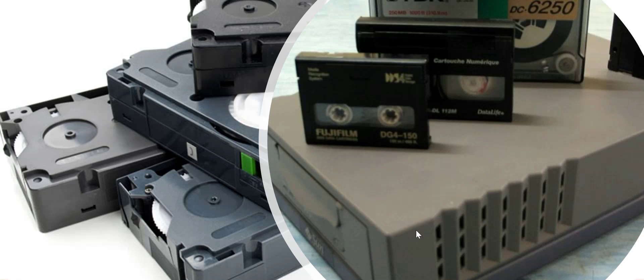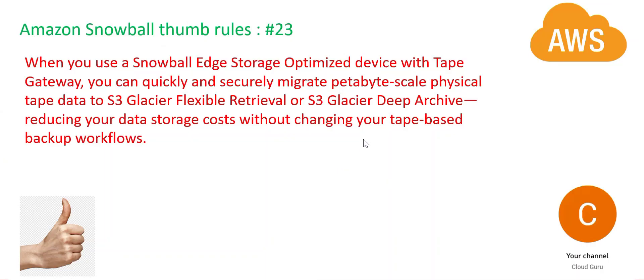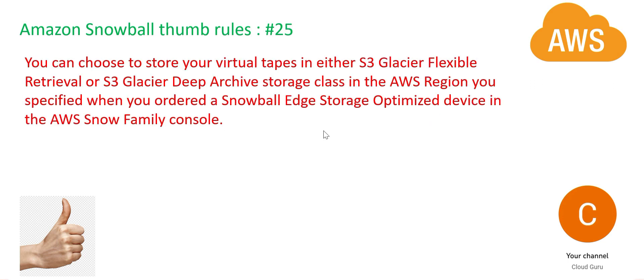Glacier has three versions: instant retrieval, flexible, and deep archive. You cannot put tape data into instant retrieval — you can only put it in flexible and deep archive. Always remember: you cannot copy tapes to instant retrieval because they are absolutely cold storage and you want to reduce your cost. Why put it in instant retrieval when you know you will not be accessing it anytime soon? Put it in flexible retrieval or Glacier deep archive. When you move it to S3 Glacier or S3 deep archive storage classes, these are virtual tapes.